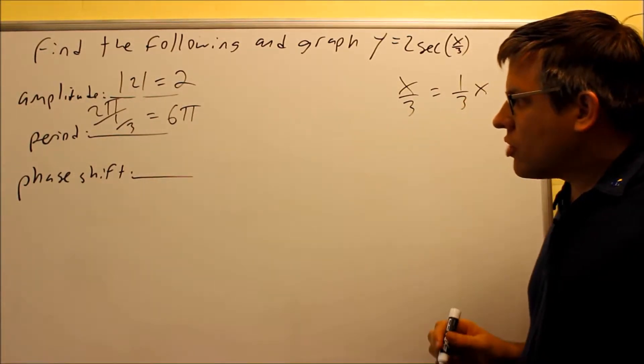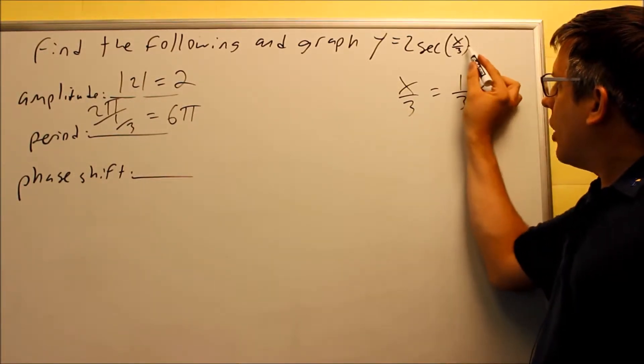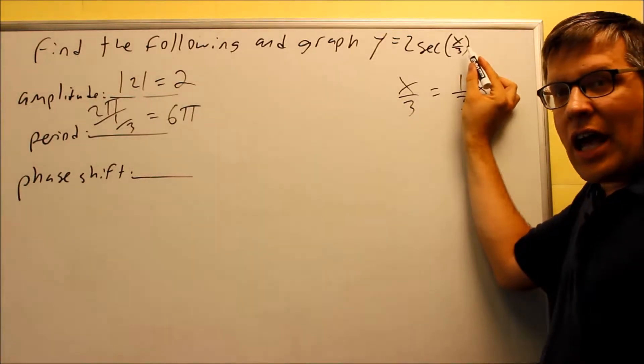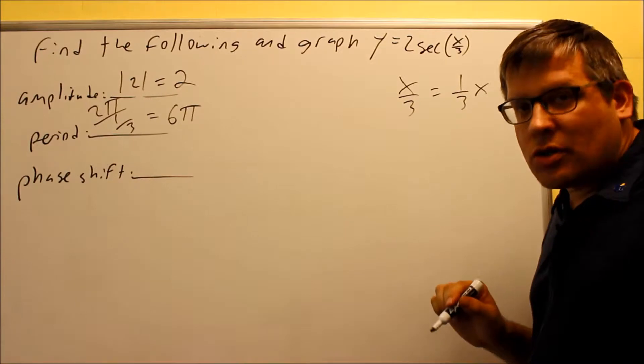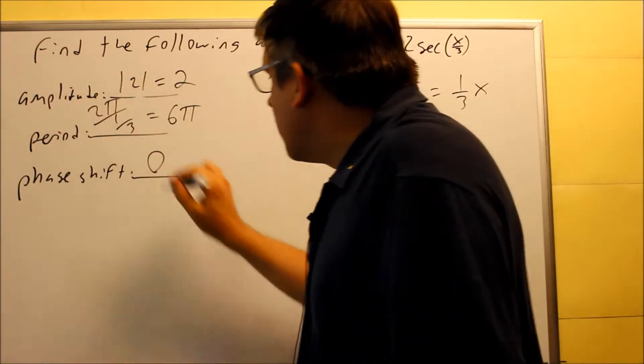Phase shift. Phase shift would be the opposite sign of the number after the x. Now in this case, I don't have a number after the x. So because I don't, that means the phase shift is going to be 0 in this case. So 0 is the phase shift.